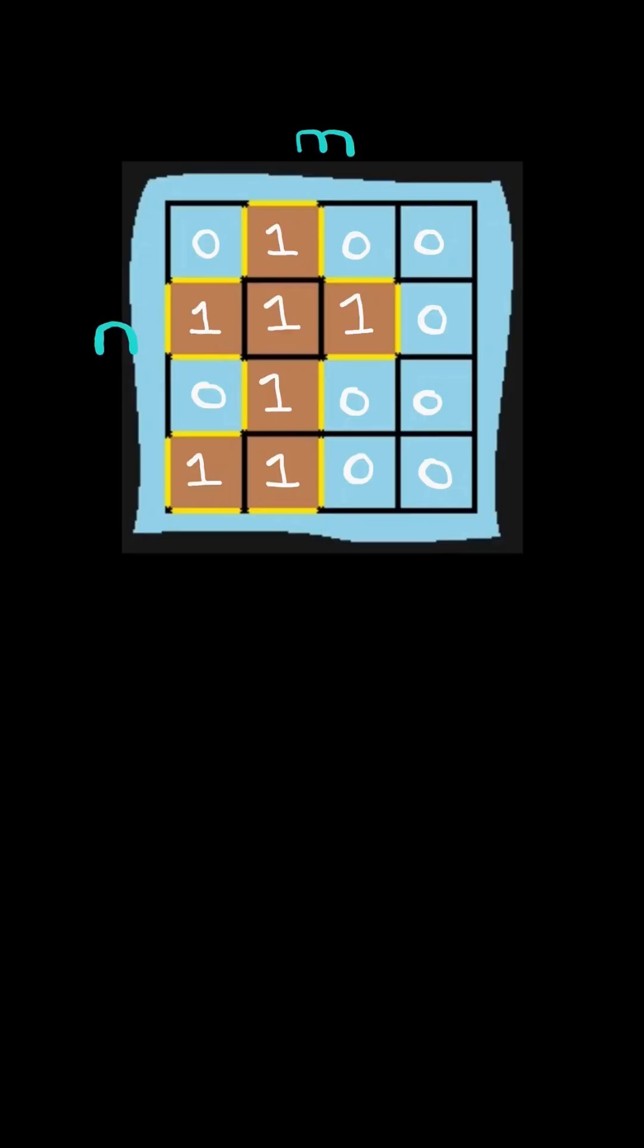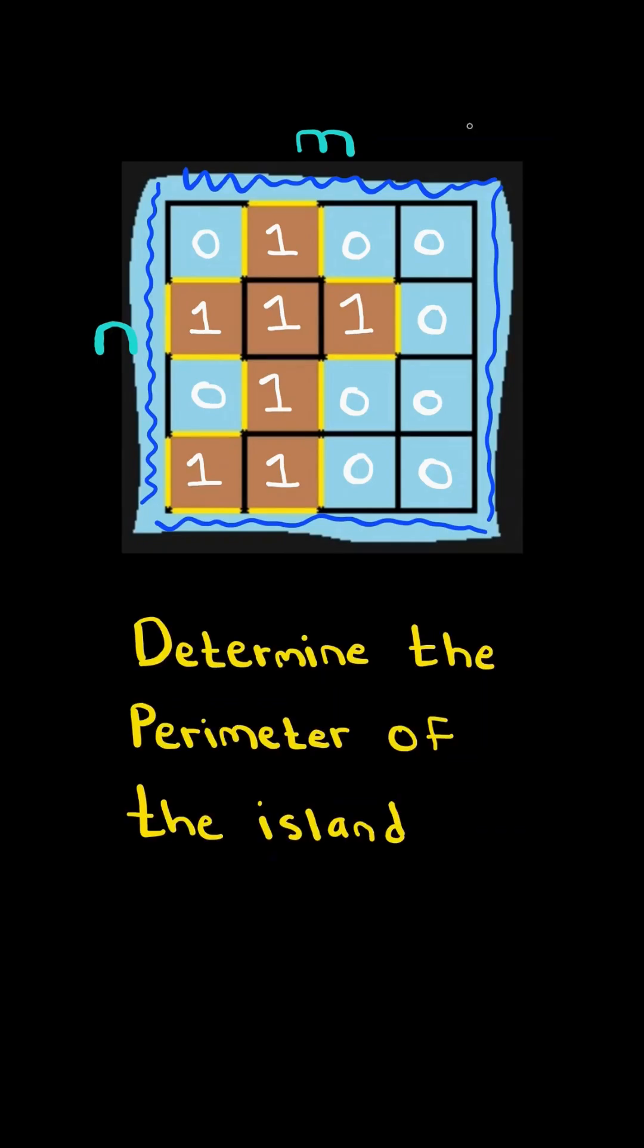Island perimeter. Given an n by m grid of zeros and ones, where one represents land and zero represents water, the grid is completely surrounded by water and there is exactly one island. Determine the perimeter of the island.